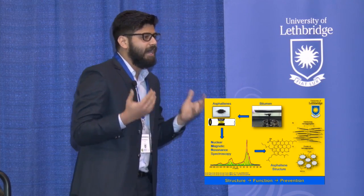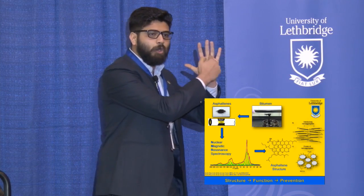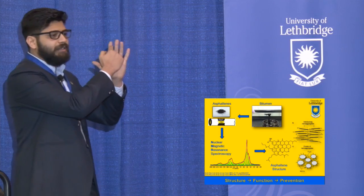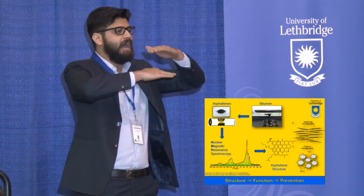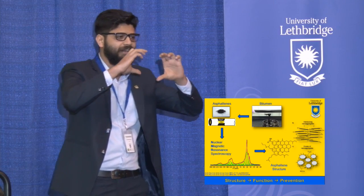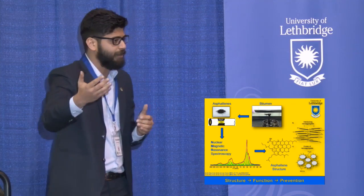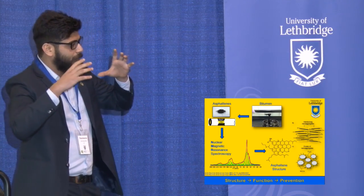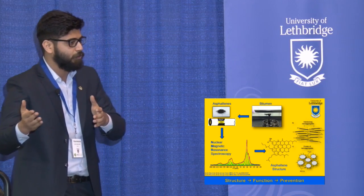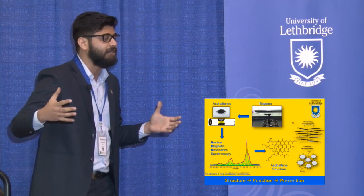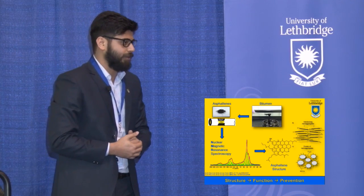We call this the island model, where the asphaltenes have a central aromatic core — like an island — with attached aliphatic chains. These molecules then stack upon each other, forming nano-aggregates, which come together at higher concentrations to form clusters. This overall process leads to the formation of giant aggregates that block pipelines and even underground oil reservoirs.